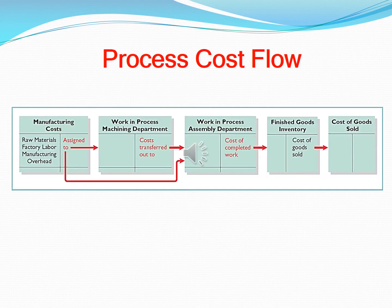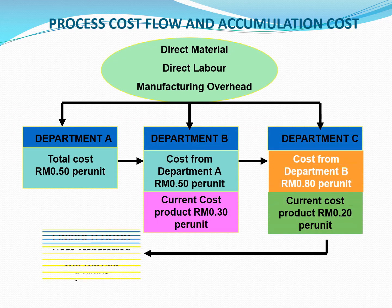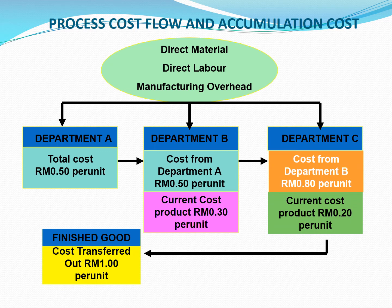Process cost flow: this slide shows the cost flow process. Raw materials, labor hours, and manufacturing costs are debited in the manufacturing account. When assigned, costs are transferred to Work in Process 1; when completed, transferred to Work in Process 2; when completed again, transferred as finished goods; and finally transferred to Cost of Goods Sold. All costs incurred from each department are added as cost price to the product.